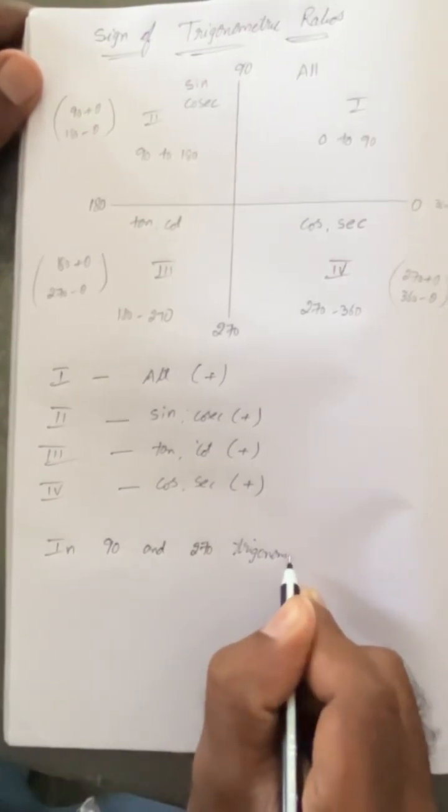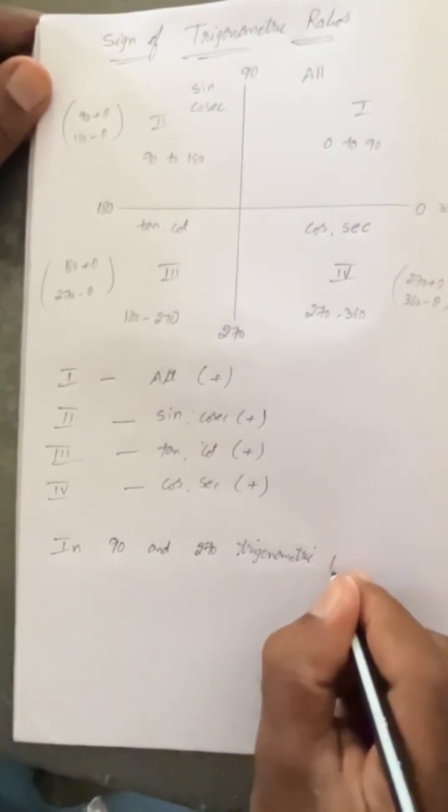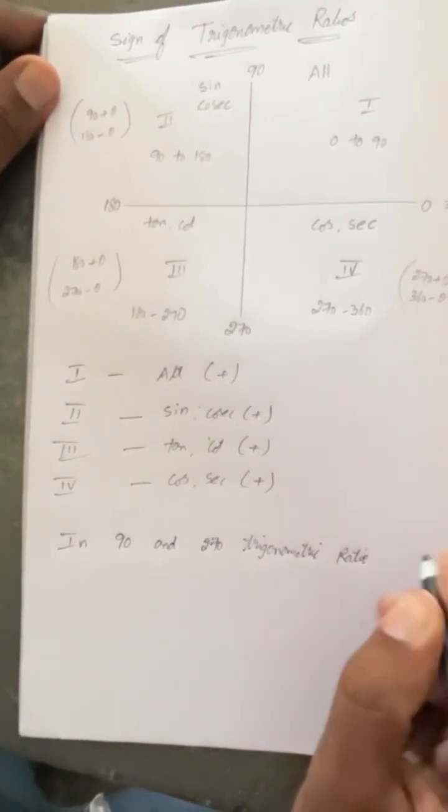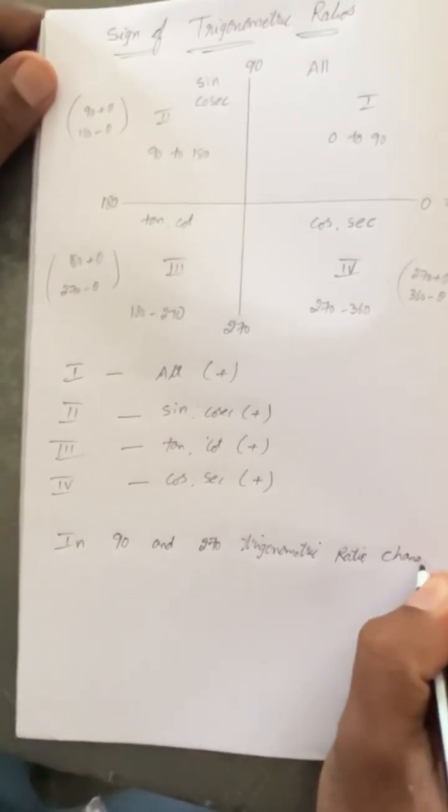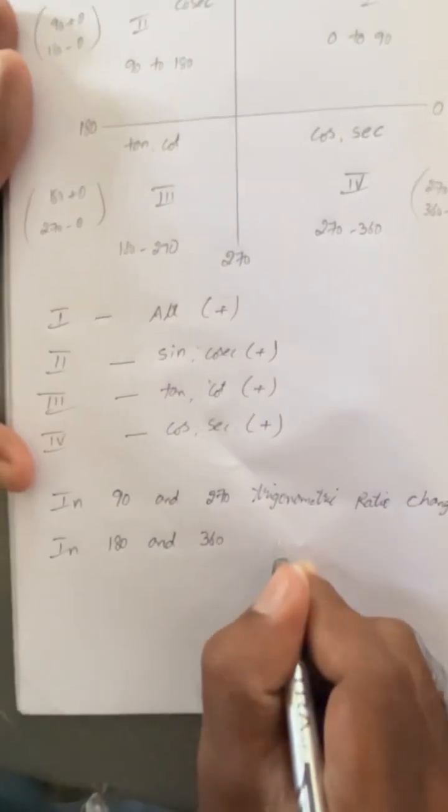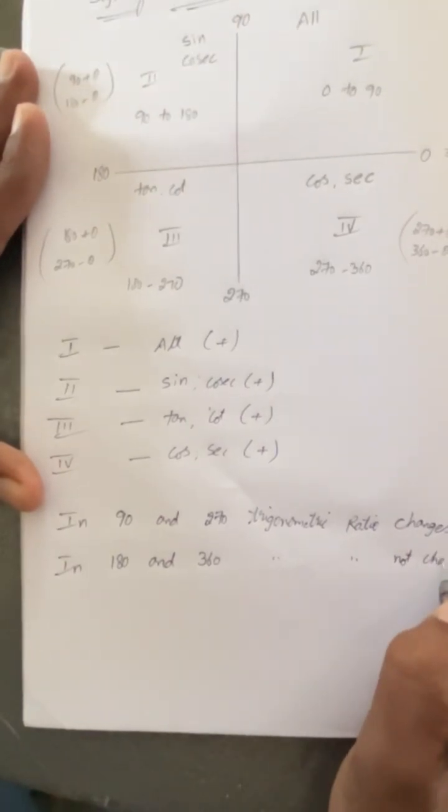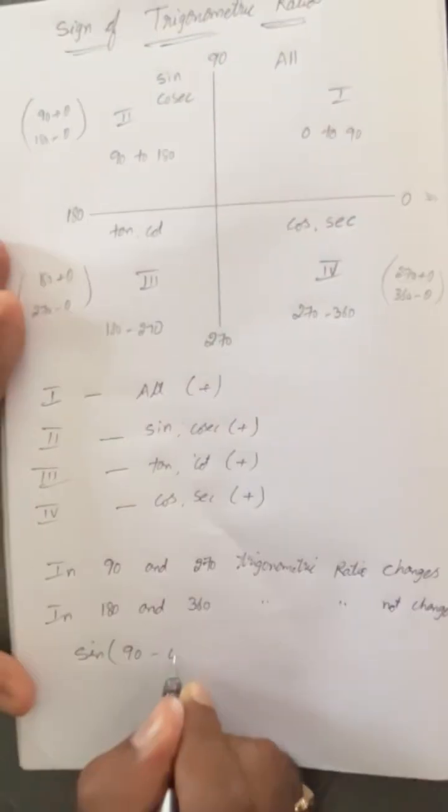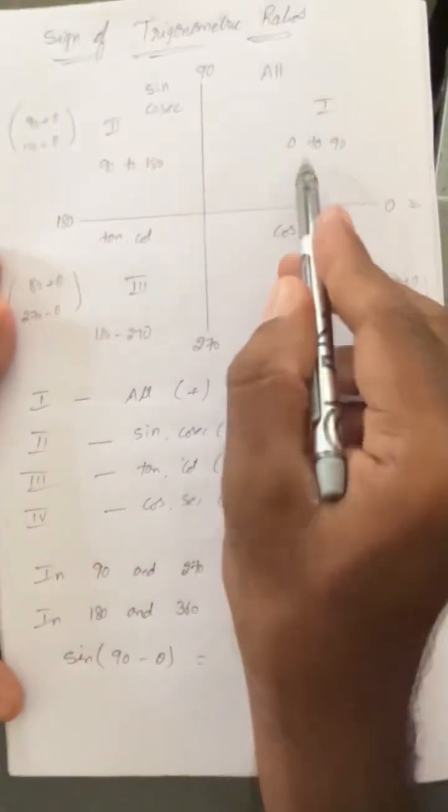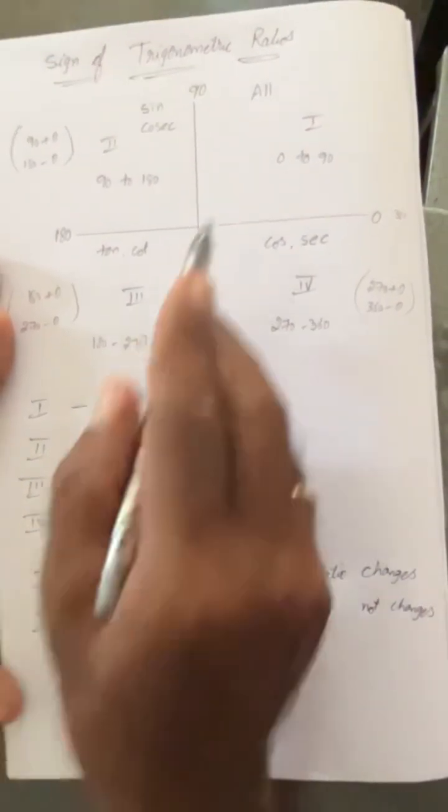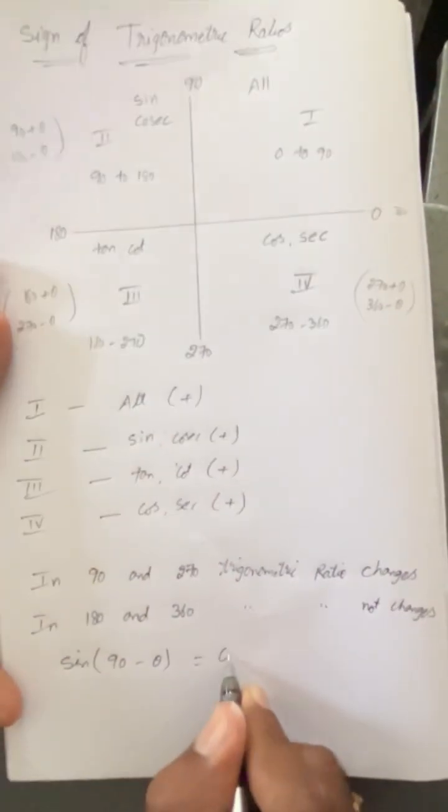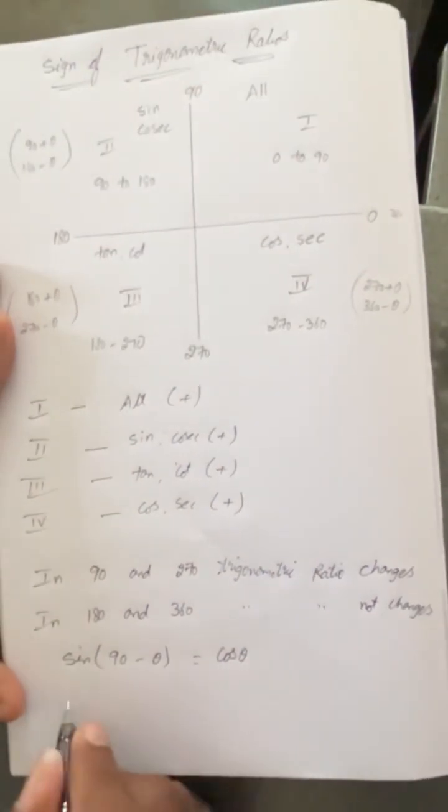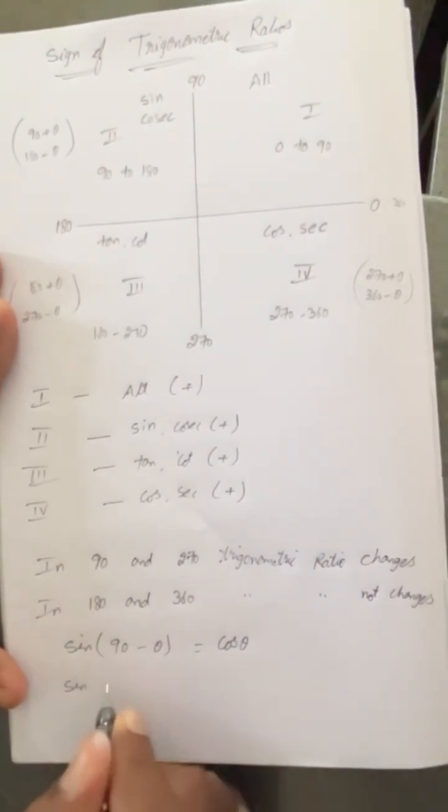In 90 and 270, the trigonometric ratio will change. That is, sine to cos, cos to sine, tan to cot, cot to tan like that. But in 180 and 360, it will not change. We can see easily, even multiples of pi will not change, odd multiples of pi by 2 will change, and even multiples of pi by 2 will not change.